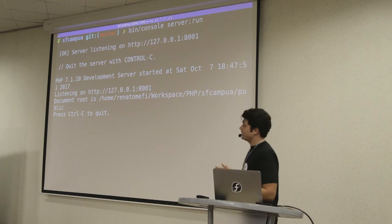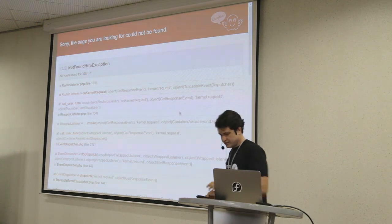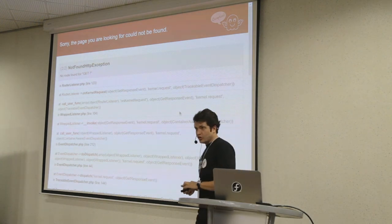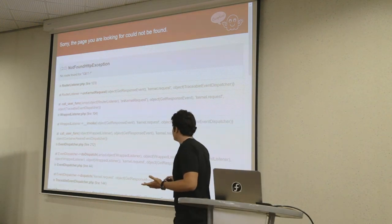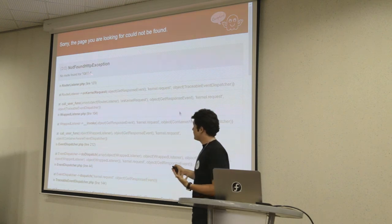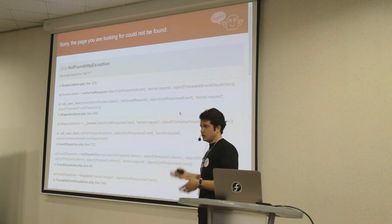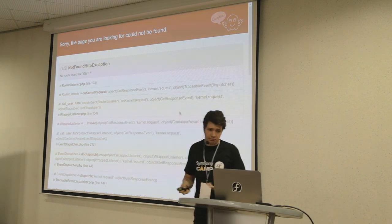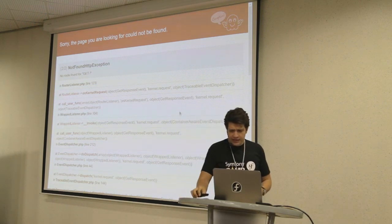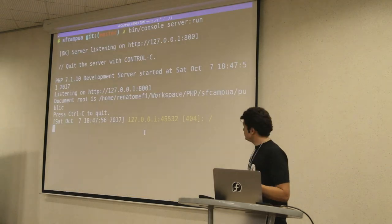Now I have a server running locally. Let's take a look. So there's an error, but it's cool - we don't have a route for slash. That's expected, we don't have a homepage, we have nothing there. It's really simple - you can now see exactly what's happening.